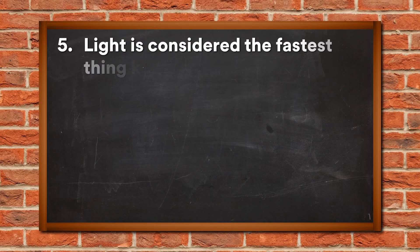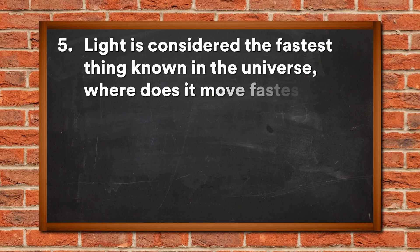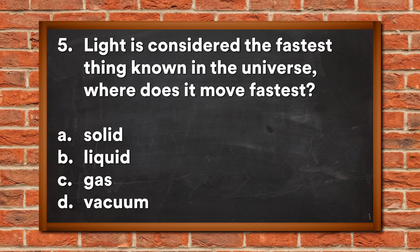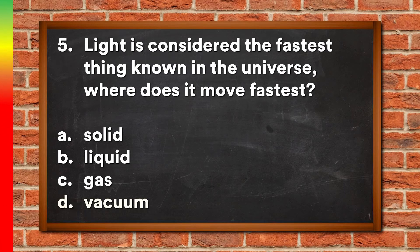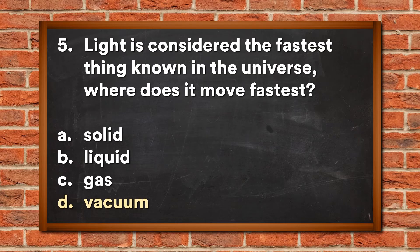Question 5: Light is considered the fastest thing known in the universe. Where does it move fastest? A. Solid, B. Liquid, C. Gas, D. Vacuum. The answer is D, Vacuum.